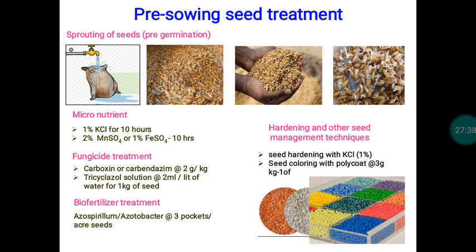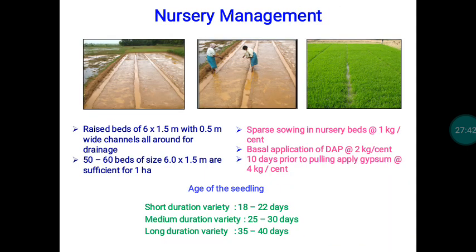When the plumule just emerges from the seed coat, those pre-germinated seeds are used for sowing in the nursery. For the paddy nursery, we prepare raised beds with dimensions of 6 × 1.5 meters, with a channel width of 0.5 meters. To cultivate one hectare of land, 50 to 60 beds of this dimension are needed. In each bed, 500 to 600 grams of seeds can be sown.